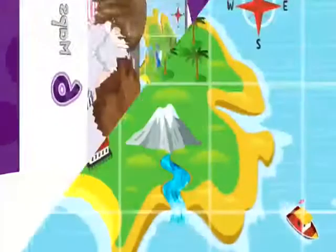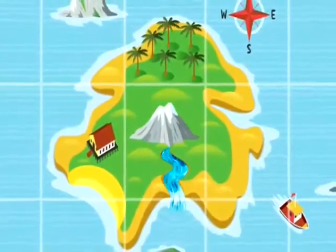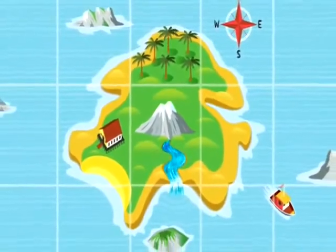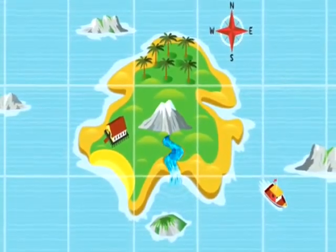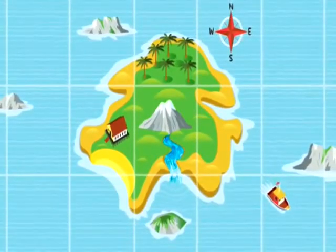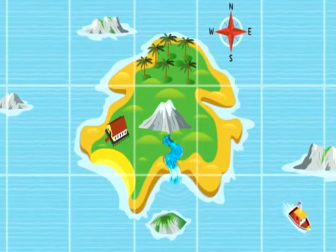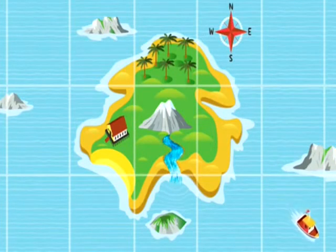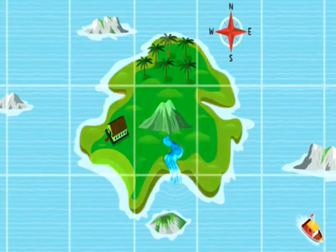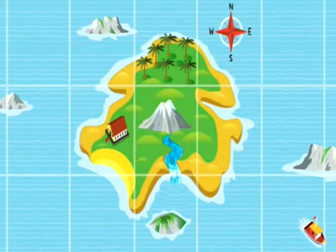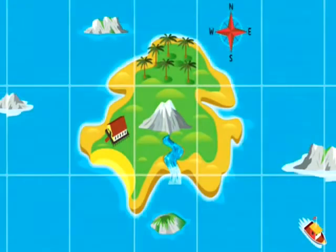This is a map. What can you see on the map? There's an island and some sea. The island is green and the sea is blue.